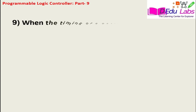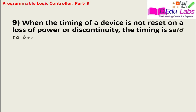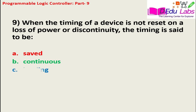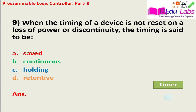Question number nine: when the timing of a device is not reset on a loss of power or discontinuity, the timing is said to be — option A: save, option B: continuous, option C: holding, option D: retentive. The answer is option D — retentive.